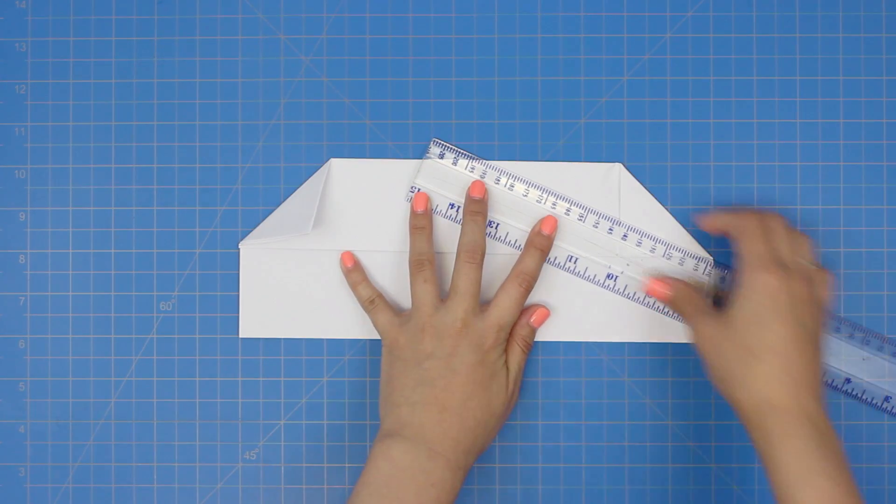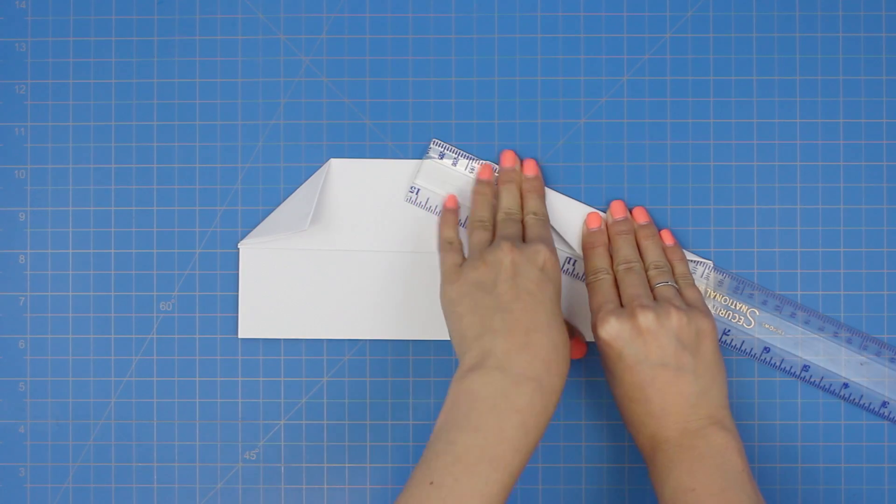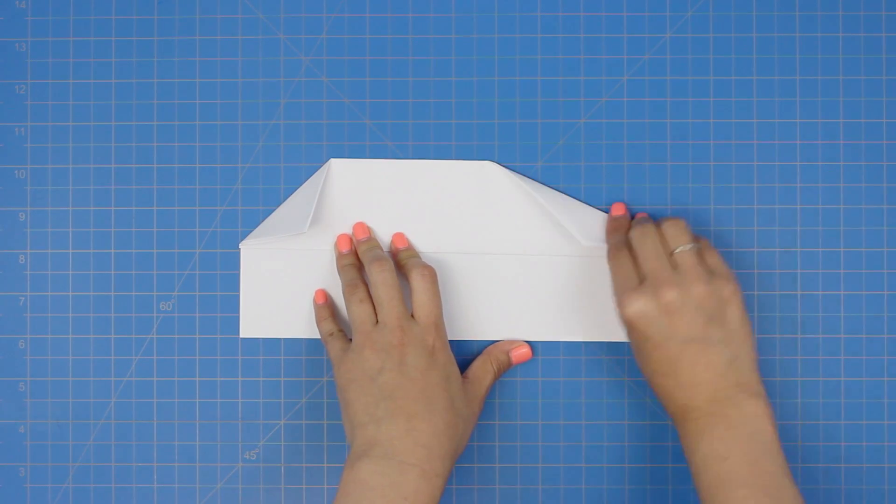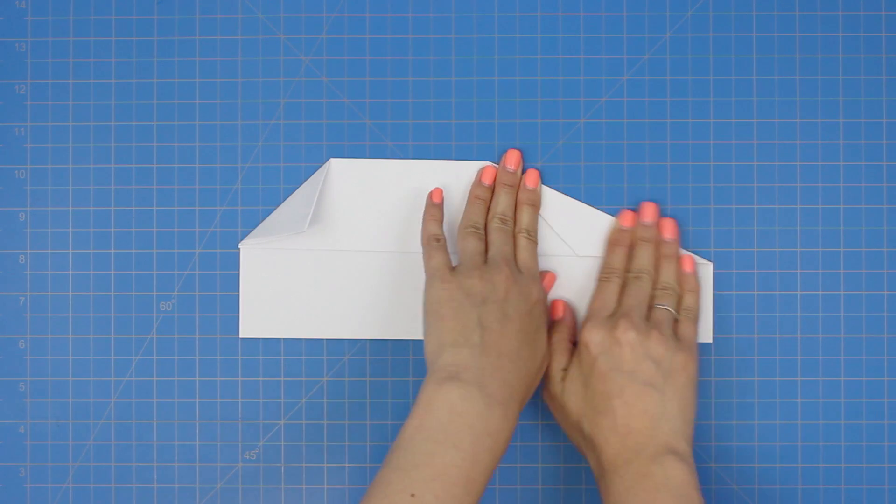Next, fold this flat edge down along the same center line, and repeat with the other side. A ruler might help.